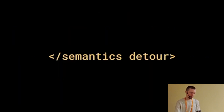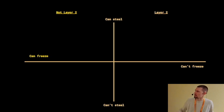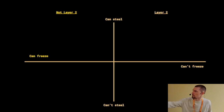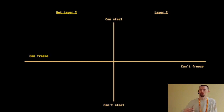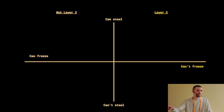I've laid out a quadrant framework. Systems on the top half are ones where third parties can steal user funds. Systems on the left are not layer two systems because third parties can freeze funds — users cannot get their funds out of the system. Systems on the right are layer two systems because third parties cannot freeze user funds — users can always make a transaction on the mainchain to get their money out of the bridge.